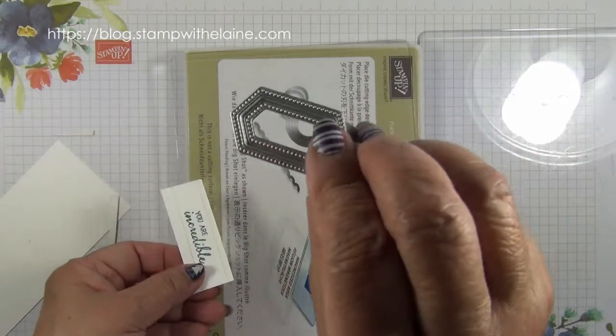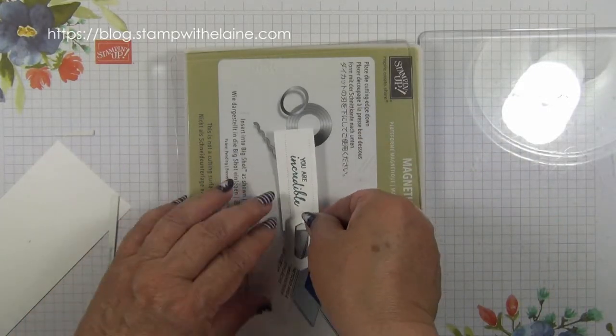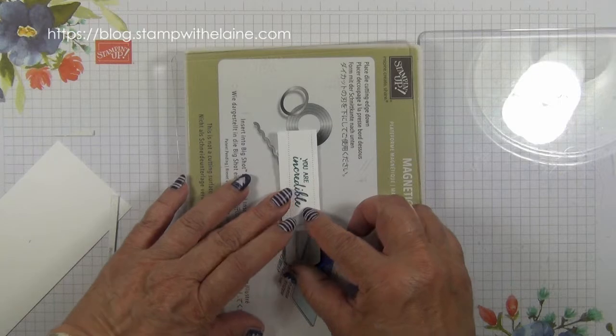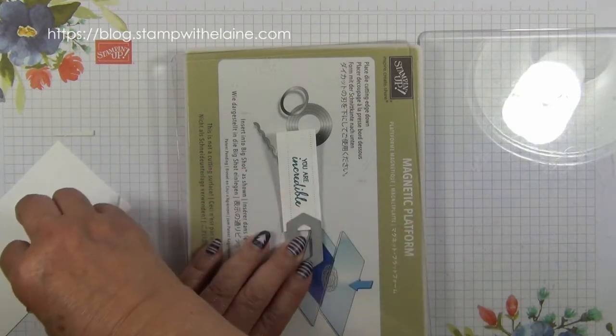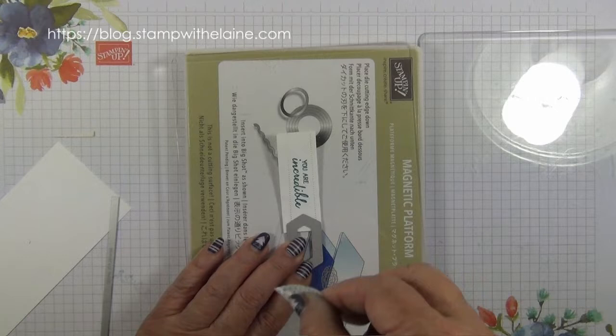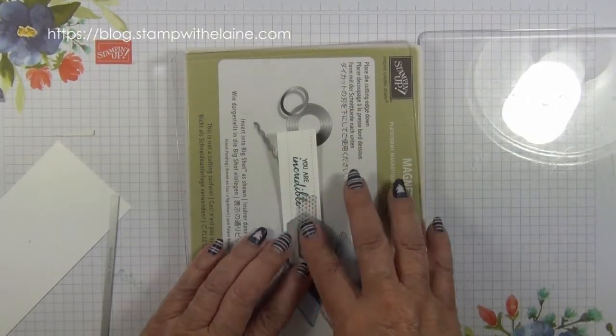So then you use this smallest nest stitched nested label die and pop it by eye. You can see where it's going. And again secure that to your plate.